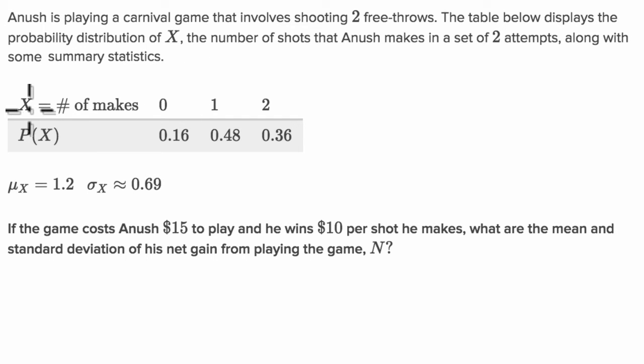So here's the random variable X. It's a discrete random variable. It only takes on a finite number of values. Sometimes people say it takes on a countable number of values. But we see he can either make zero free throws, one, or two of the two.